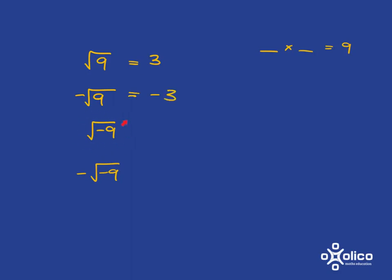Now, this is where things get interesting. When I'm asking for the square root of negative 9, I'm asking what, multiplied by itself, is going to give me negative 9 as the answer. Well, it can't be 3, because 3 times 3 gives me 9. Maybe it's negative 3, but negative 3 multiplied by negative 3 — negative times negative is positive — gives me positive 9. There's no way to multiply something by itself and end up with a negative, because a negative times a negative is a positive, and a positive times a positive is a positive.